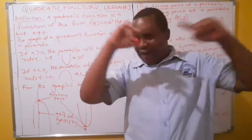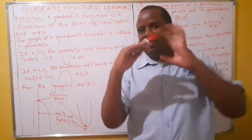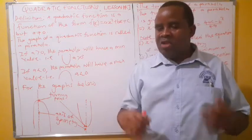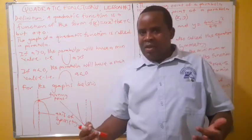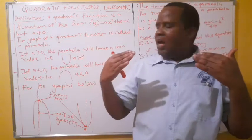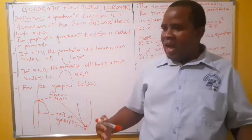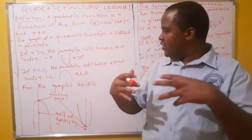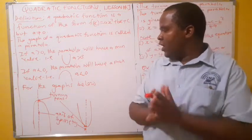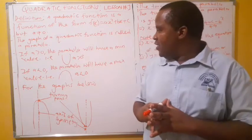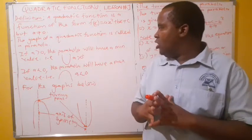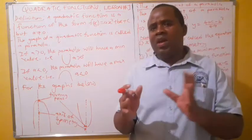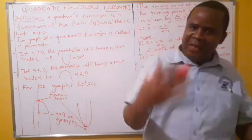If you were to plot a quadratic function, you get a graph called a parabola. A parabola has two orientations: one that faces downward and one that faces upward. The one that faces down has a maximum turning point, and the one that faces up has a minimum turning point. How do you tell whether you have a minimum or maximum turning point?